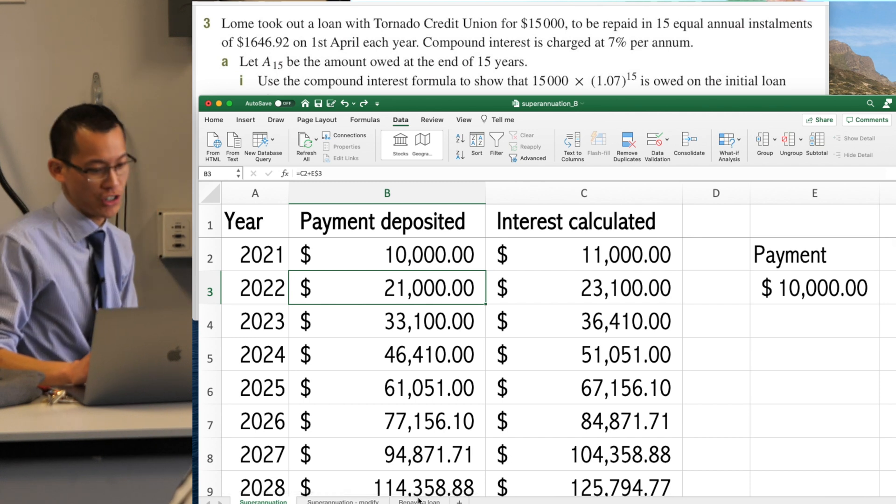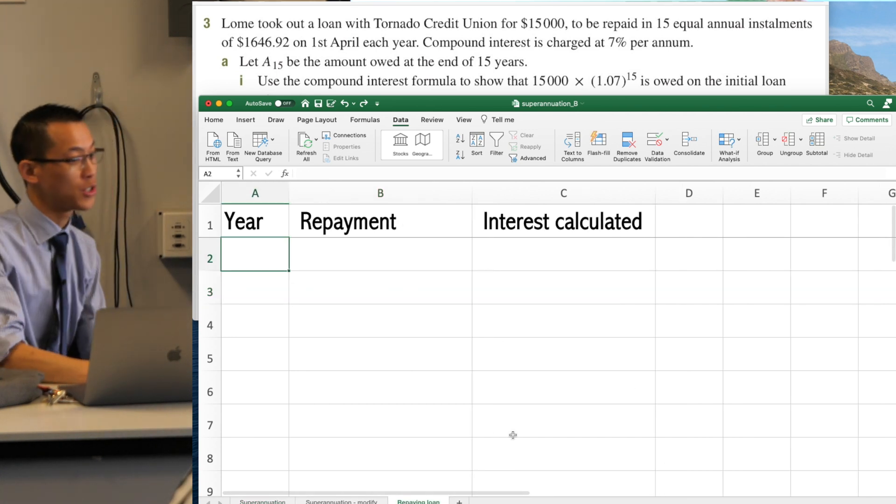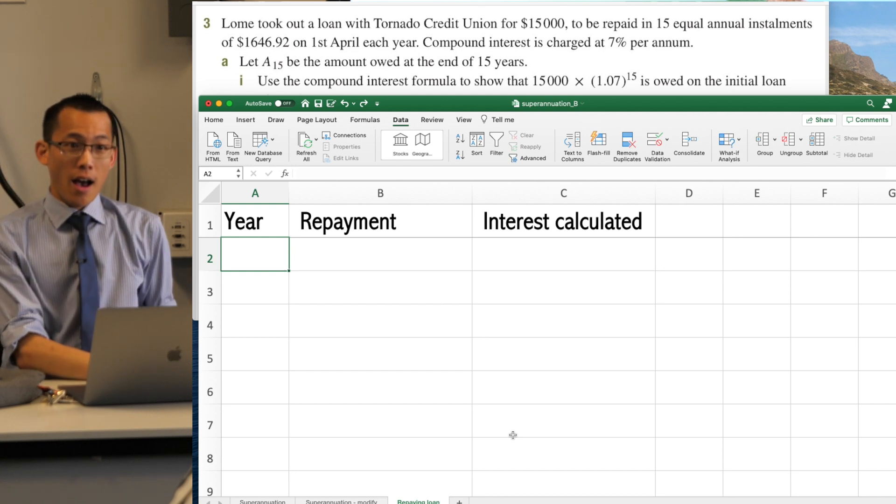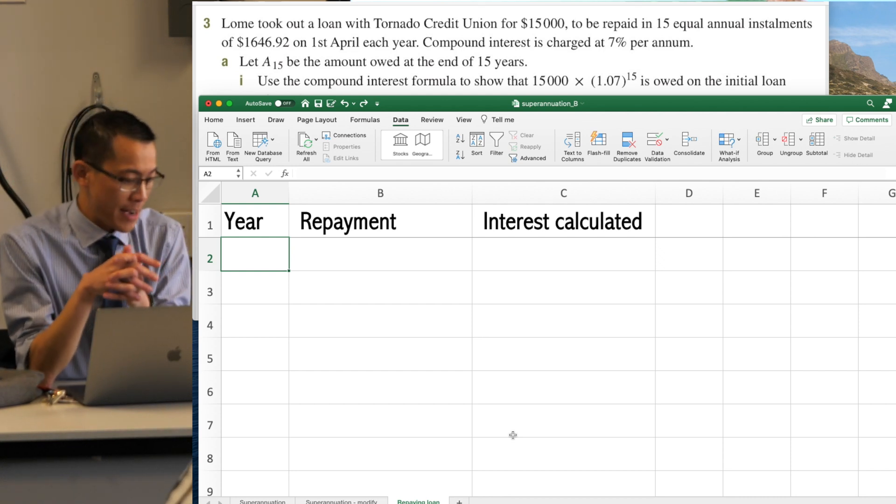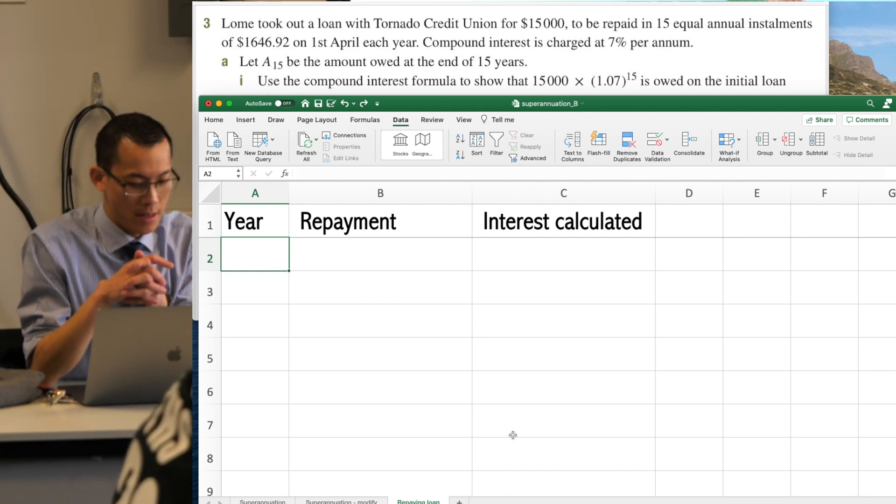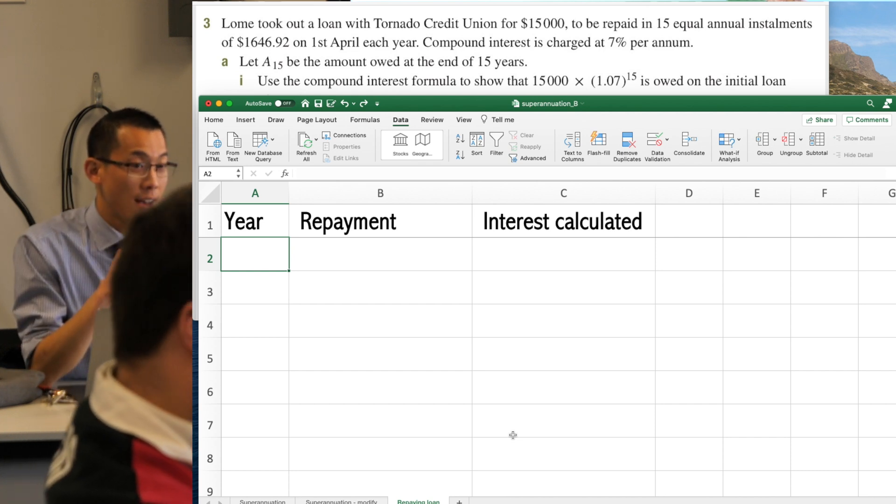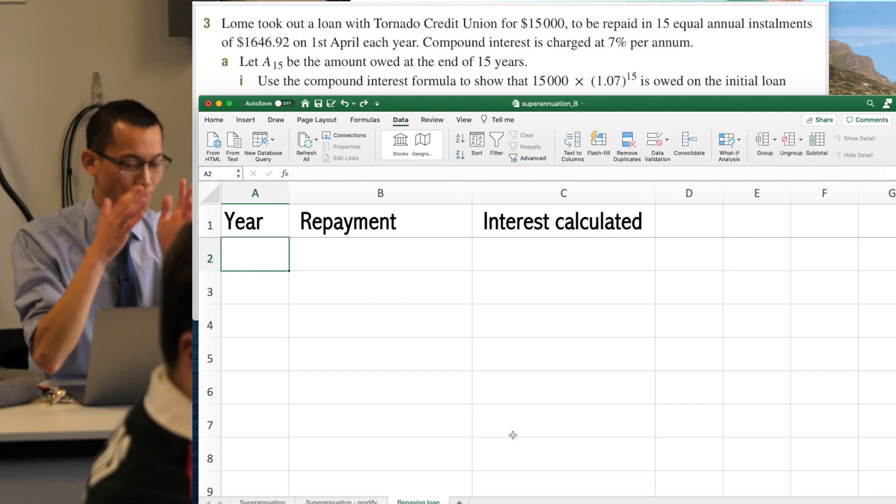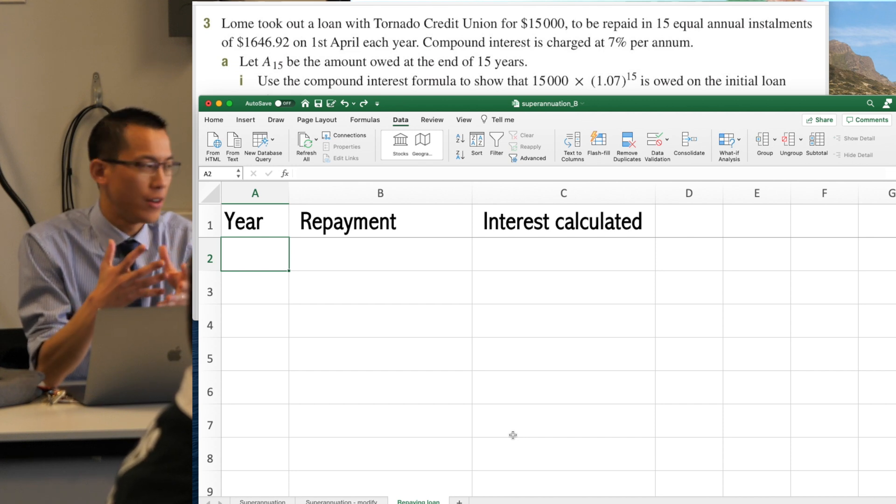I asked you to open up a fresh spreadsheet for me, and this is what I would like you to make it look like. It's very similar to the previous one, right? There's going to be a year, there's going to be an interest calculation, but the subtle difference is we're going to have a repayment, not a payment.